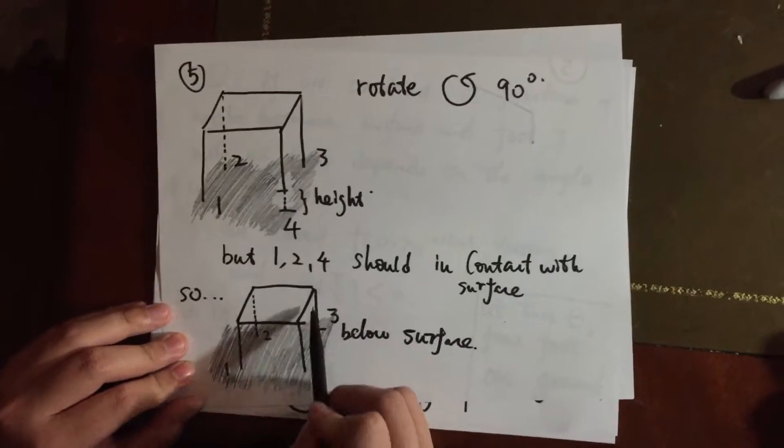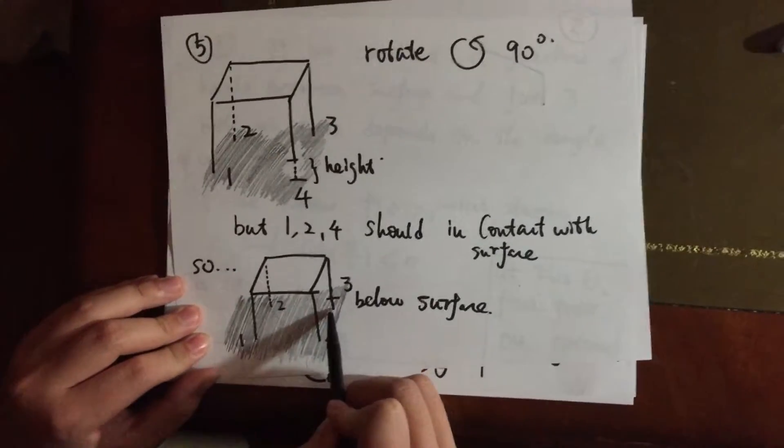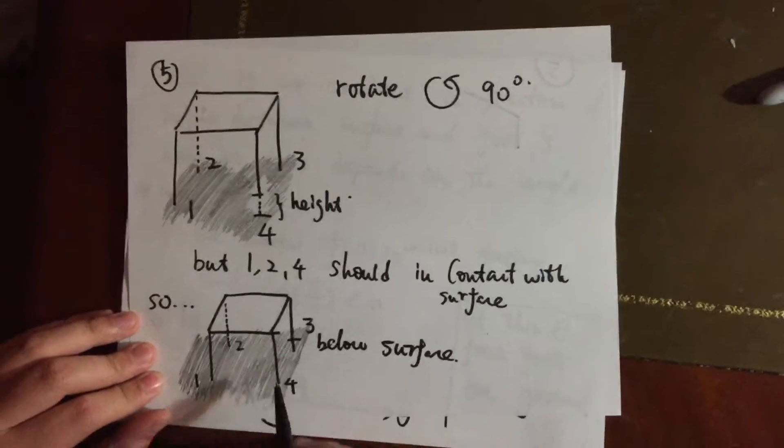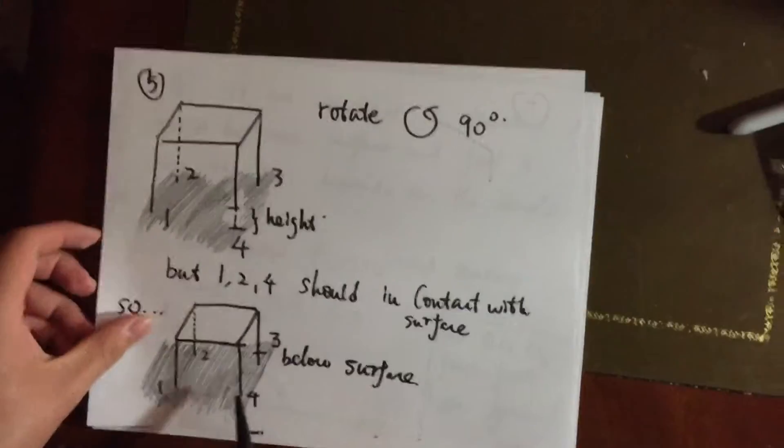we let the table to stick into the surface. Specifically, the foot 3 should be going to the surface, and now 1, 2, 4 again are in contact with the surface with the same distance, which is zero.